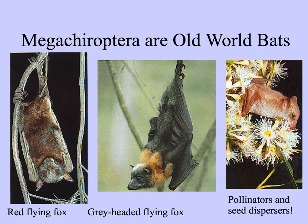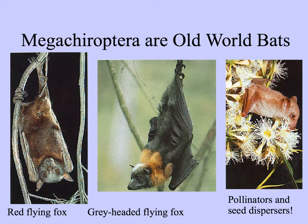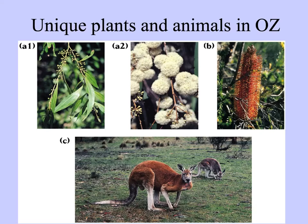Bats are found around the world, but the larger bats, the megachiroptera, are very cute because they look like flying foxes with very sweet faces. These are important pollinators and seed dispersers, but only of plants that live in the Eastern Hemisphere, or the Old World.